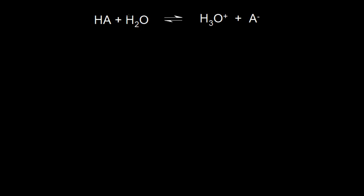Here we have a generic acid-base reaction that uses the Bronsted-Lowry definition. HA is our generic acid — it's going to donate a proton to H2O. So H2O is our Bronsted-Lowry base. If H2O accepts a proton, H2O becomes H3O+. And if HA donates a proton — if it loses a proton — it's left with A minus, the conjugate base.